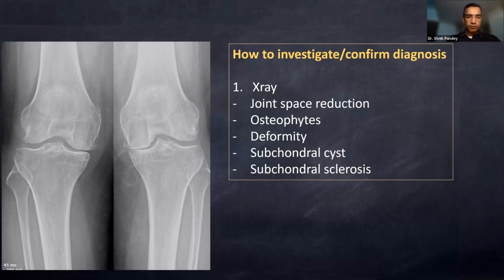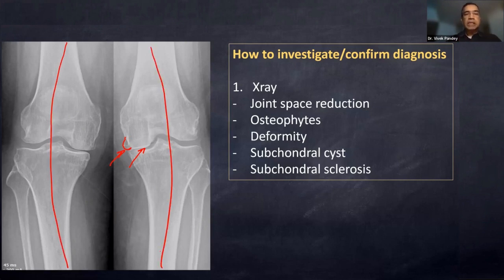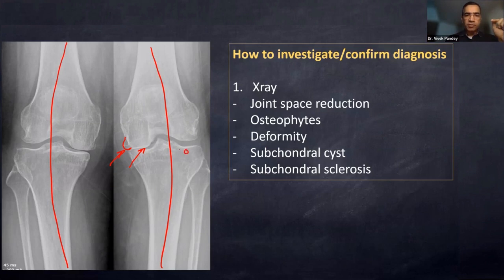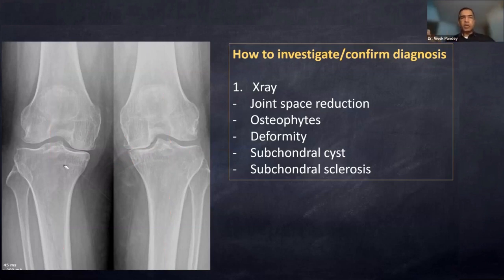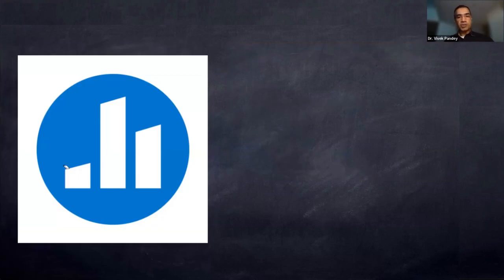On the X-ray you can see: joint space reduction, osteophytes (small projections at the bone edge), bone deformity, subchondral cysts (small cystic changes below the cartilage), and subchondral sclerosis — the whitish thickened area of bone below the cartilage. In all arthritis, joint space reduction is always present. If you know this as an MBBS doctor, that is more than enough.